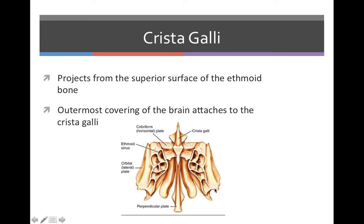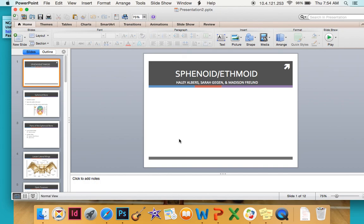The crista galli projects from the superior surface of the ethmoid bone. The outermost covering of the brain is attached to the crista galli, and it is this pointy-shaped bone right there.